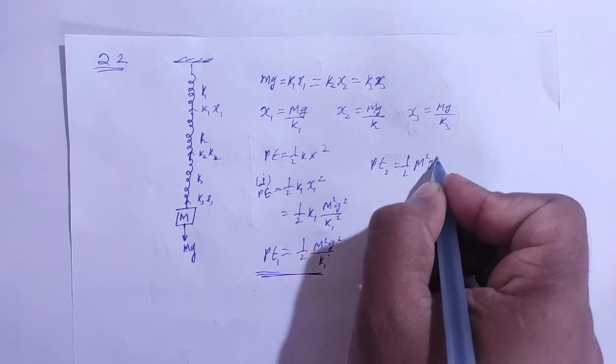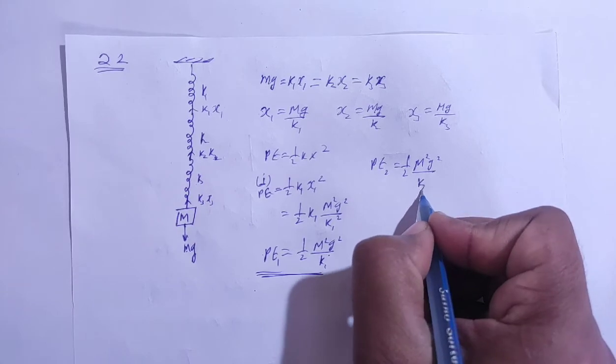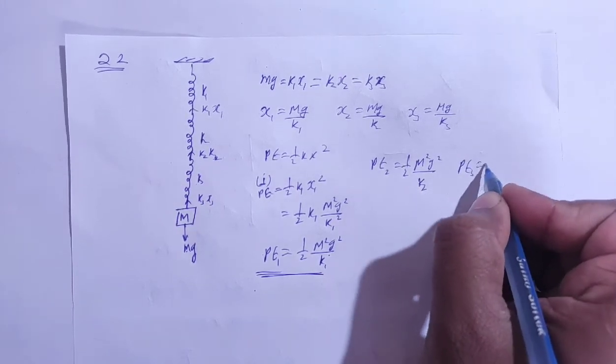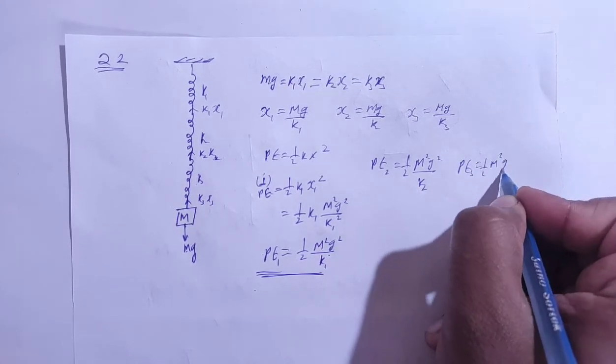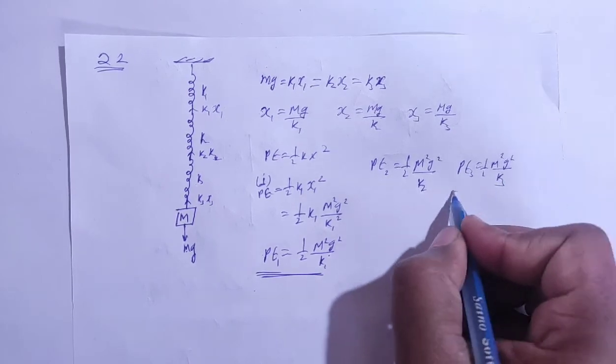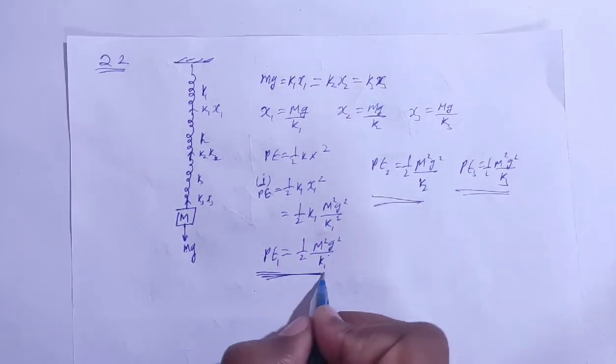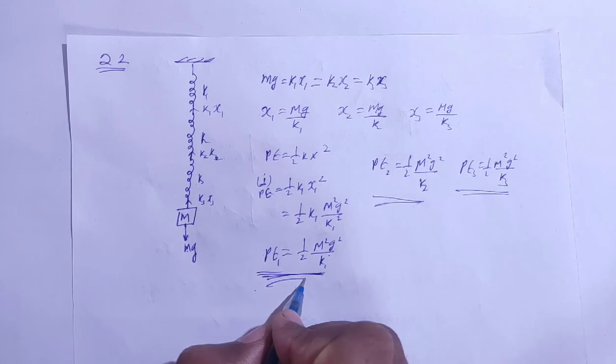For spring two, potential energy will be half m square g square by k2, and potential energy in spring three will be half m square g square by k3. This is the potential energy in all three springs.